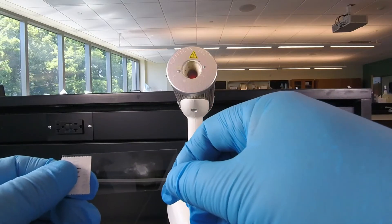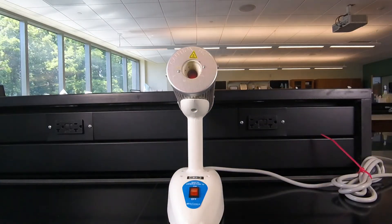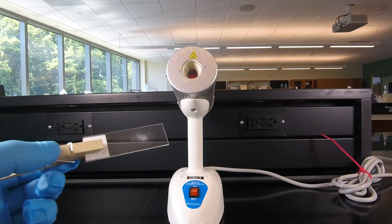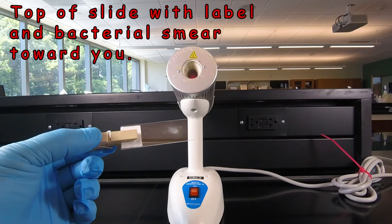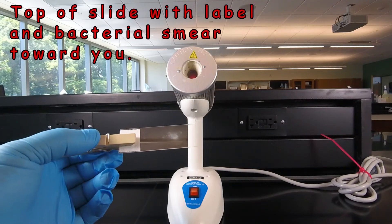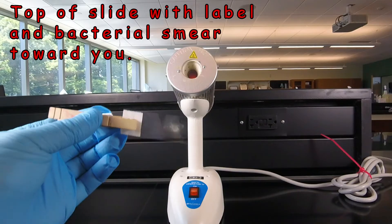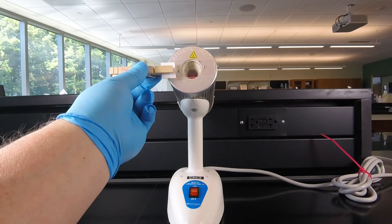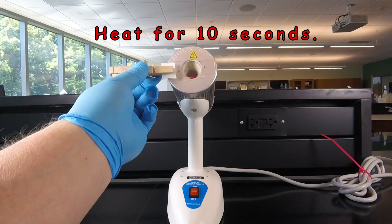So now we're ready to heat fix the slide. We're going to place the slide in a clothespin, making sure that the side with the label and the bacteria is facing us. We want to heat the bottom of the slide, not the top. We're going to place it against the opening of the Bacti-cinerator and leave it there for 10 seconds.